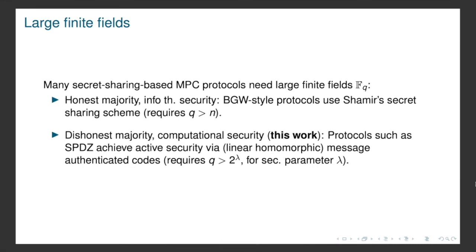We can consider at least two settings. First, the honest majority setting where we can achieve information-theoretic security. There we have BGW-style protocols which use Shamir's secret sharing scheme, but Shamir's scheme requires that the field size is larger than the number of parties. Furthermore, in the dishonest majority setting, where we can only strive for computational security — which is also the setting we consider in our paper — we have protocols such as the SPDZ protocol, which achieves active security via linear homomorphic message authenticated codes. But for those to be secure, we require that the field size is larger than 2^λ, where λ is the security parameter.